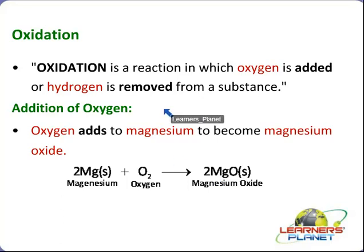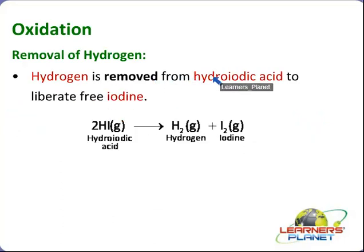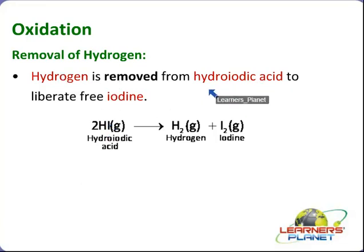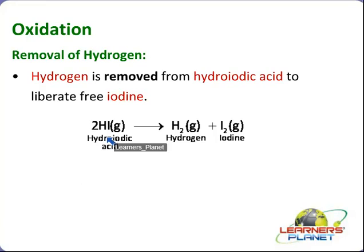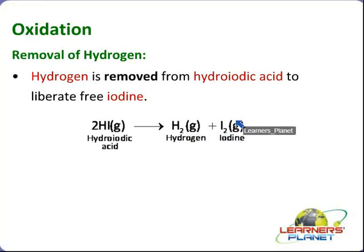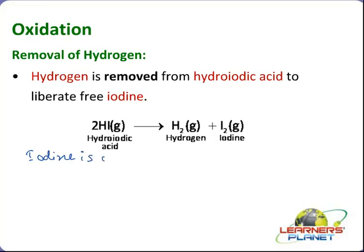Now there is another case: hydrogen is removed. Let's take the example of hydrogen being removed from hydroiodic acid to liberate free iodine. That is, 2HI — hydroiodic acid, meaning hydrogen and iodine — from here hydrogen is being removed, and what is formed is iodine. In this case, iodine is oxidized.